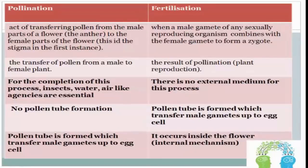As you can see in the diagram or in the given data, pollination is an act of transferring pollen from the male parts of the flower — the anther — to the female part of the flower, the stigma. Fertilization is when a male gamete of any sexually reproducing organism combines with a female gamete to form a zygote. This is called fertilization.